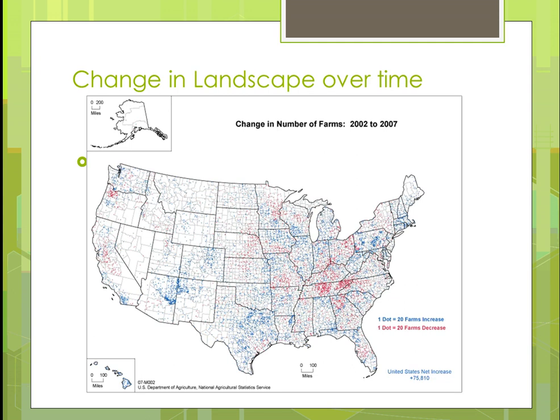This next chart shows the number of farms. A blue dot indicates a 20-farm increase in that area, and a red dot indicates a decrease of 20 farms or more. Looking at the bottom right-hand corner, between 2002 and 2007 there's been an increase of almost 76,000 farms. What that's showing us is that it's pretty much the small farmers and organic operations that are growing in number, and that's a positive thing. It's stayed pretty steady with a little increase from 2007 on.